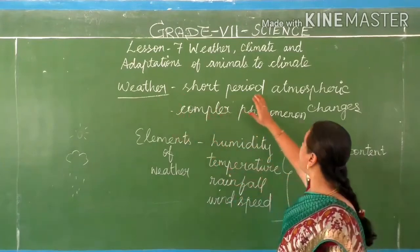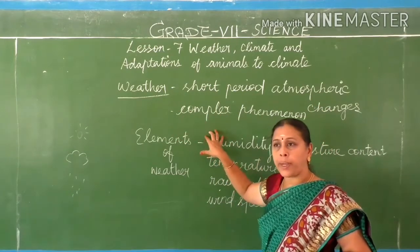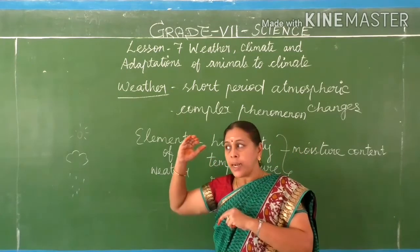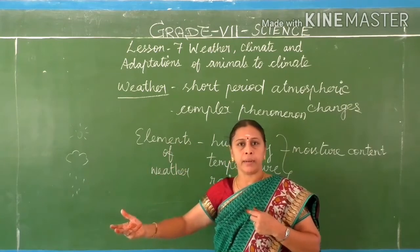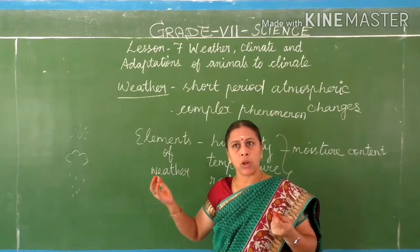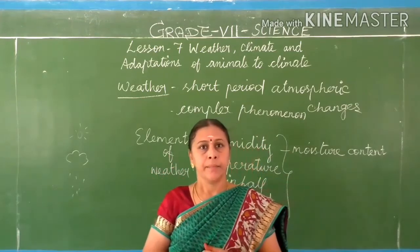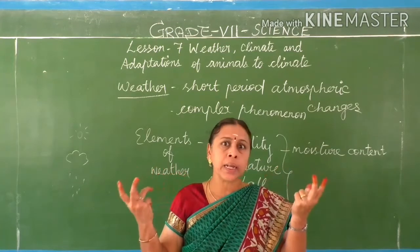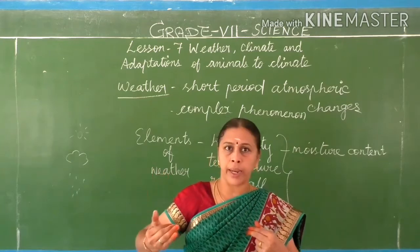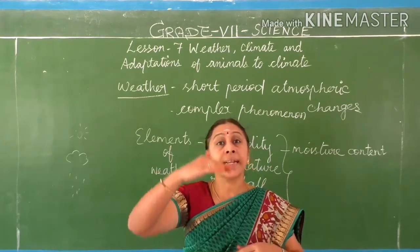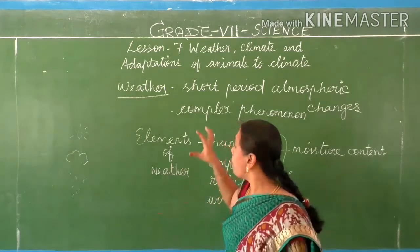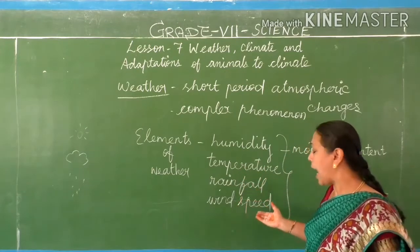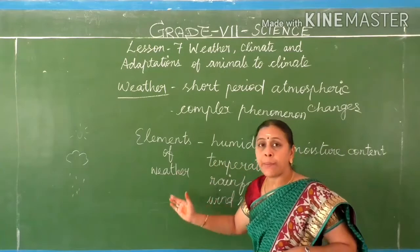Weather is nothing but the short period of atmospheric changes, and it is a complex phenomenon. We cannot predict the weather — we can't say conformably whether the day will be cloudy or sunny. At 6 o'clock it may be cloudy and pleasant, but after that bright sunshine may be too hot to bear. Suddenly clouds may appear in the rainy season and it may start to rain. Weather changes within a day itself, and is determined by factors such as humidity, temperature, rainfall, and wind speed — these are called elements of weather.